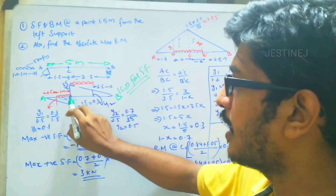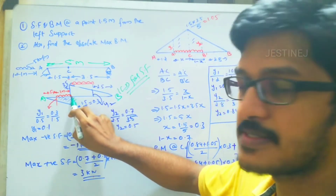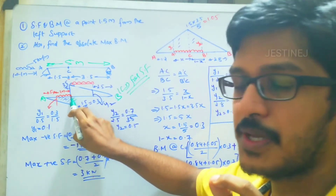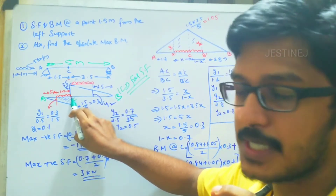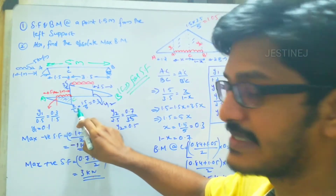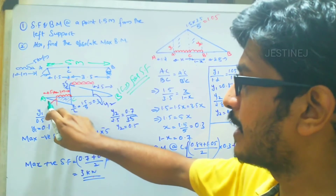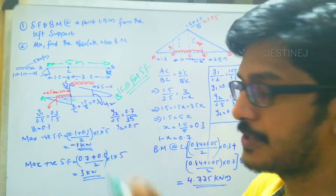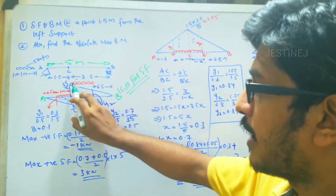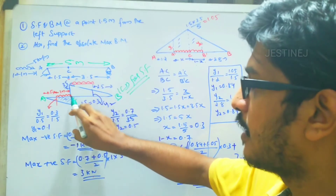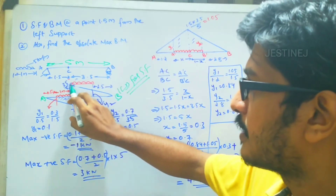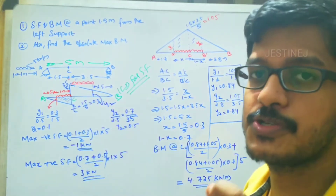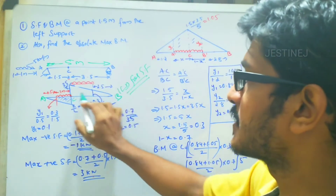The maximum negative shear force ordinate is Z by L, where Z is the A to C distance: 1.5 by 5 gives 0.3. Similarly, when the tail of the UDL touches point C, the positive shear force will be maximum. The remaining distance from C to B is 3.5, so 3.5 by 5 gives 0.7 as the positive ordinate.